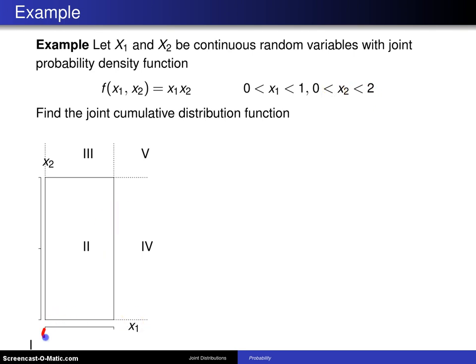If we let x1 go from 0 to 1 and let x2 go from 0 to 2, this region which is labeled 2 happens to be the support script A.